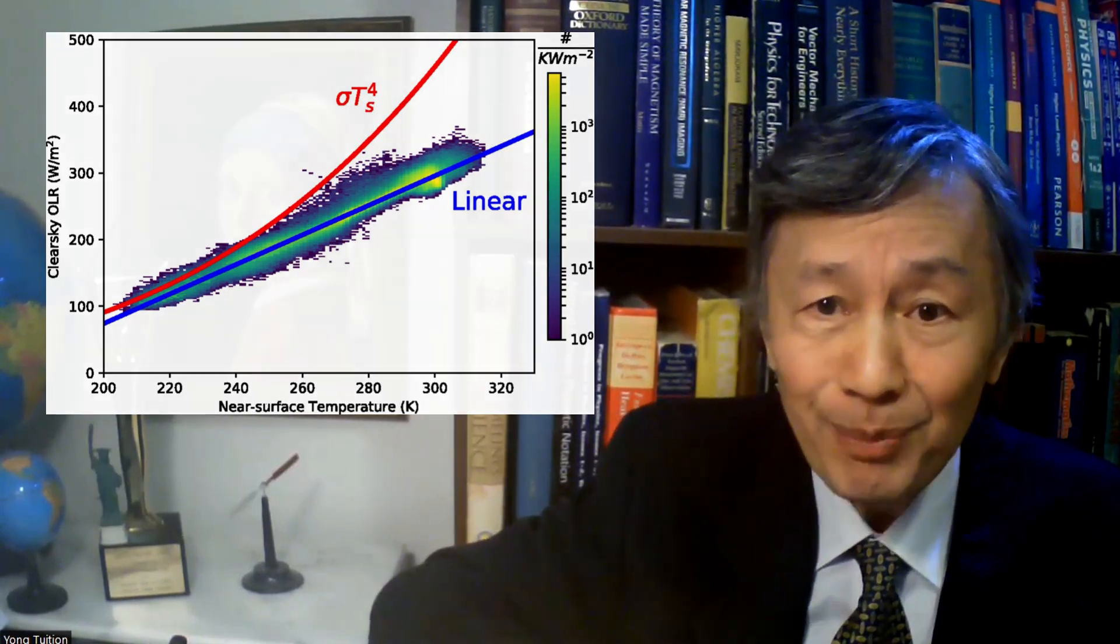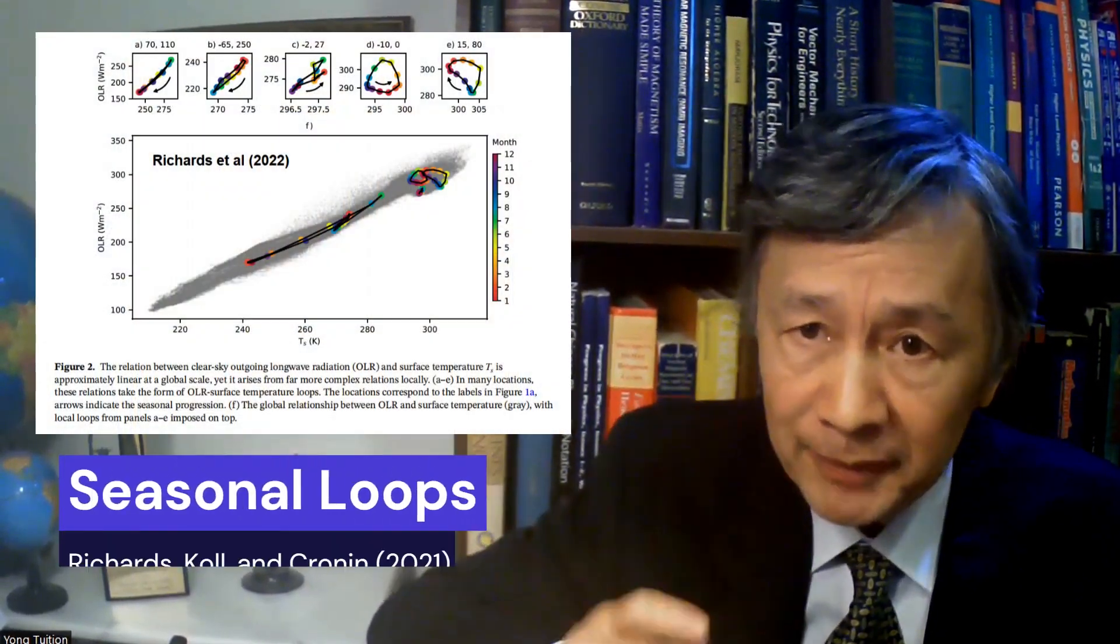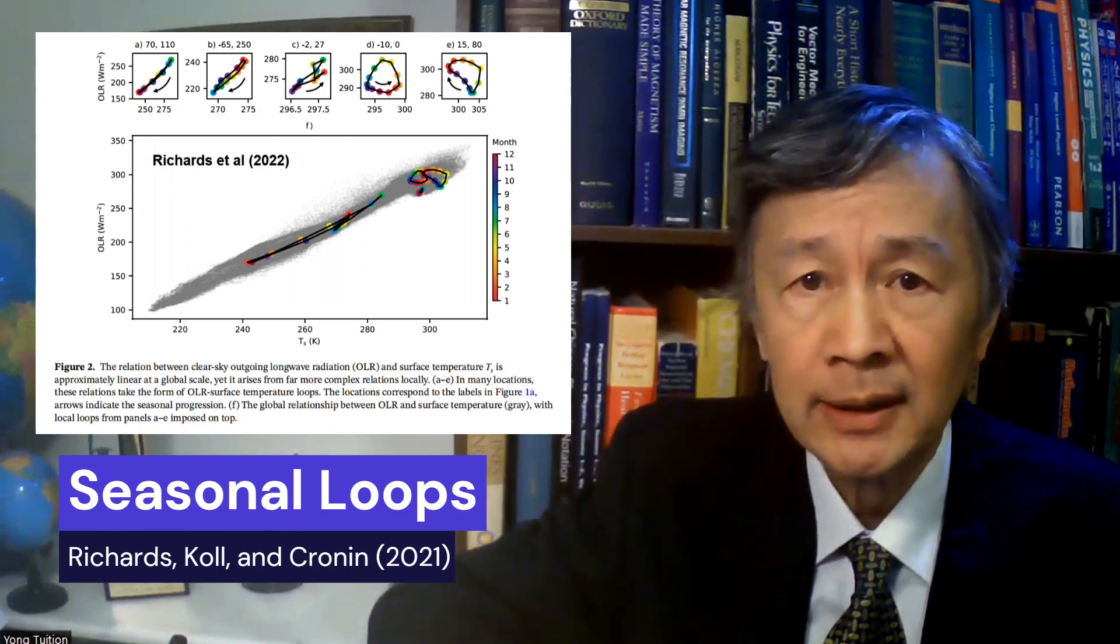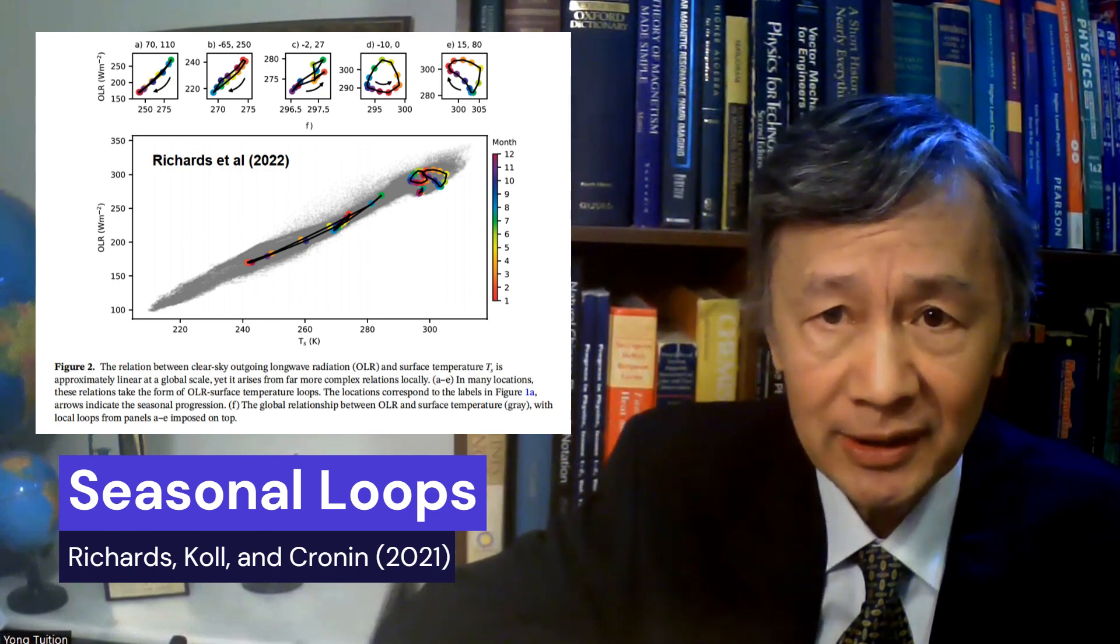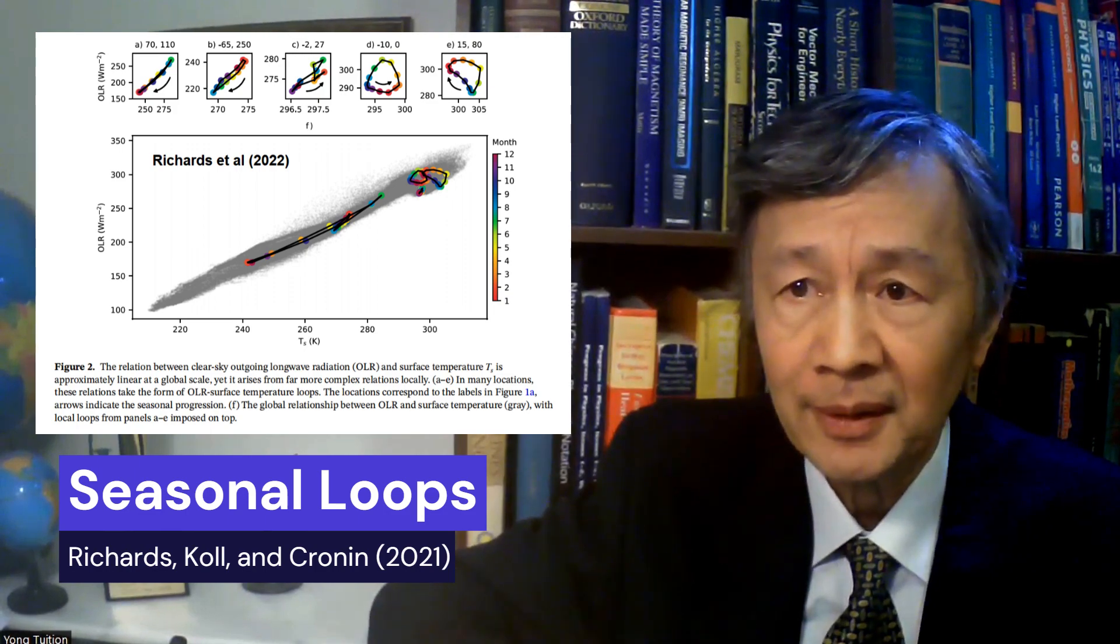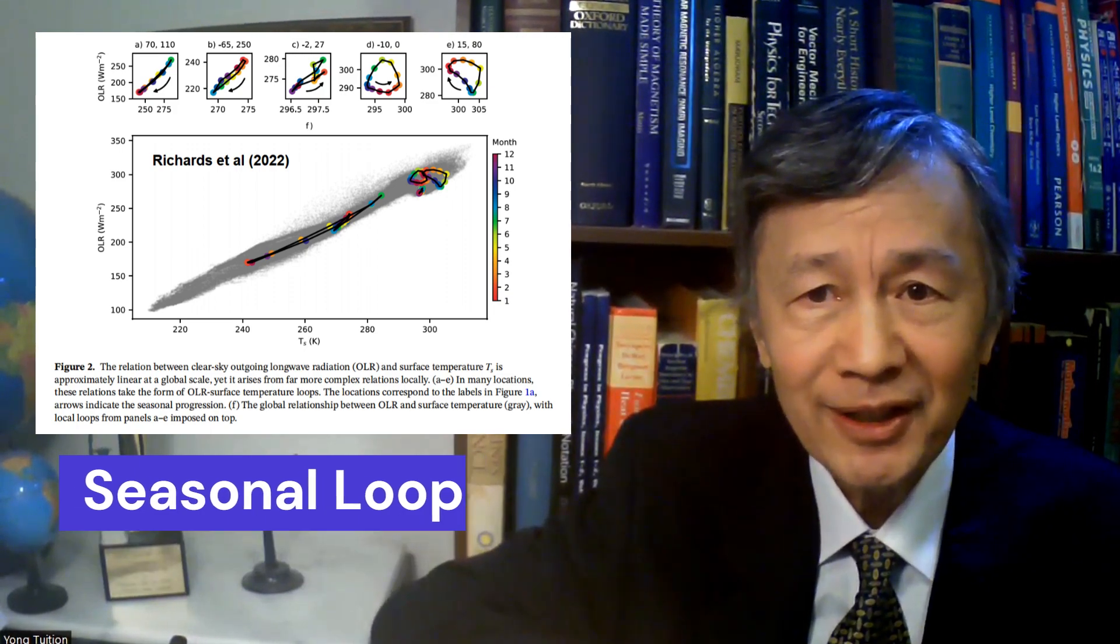In 2021, the same team reported that some loops can be identified in different sections of such a linear curve as shown in this figure. They were puzzled that the single-valued linear function previously thought might be a multi-value function of the local surface temperature and other variables.